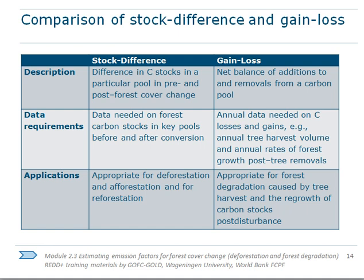A useful way to describe these two methods is the library analogy, where books represent tons of carbon. The stock difference approach counts all books before opening the library in the morning, then counts them again after closing in the evening — the difference tells how many books left. In the gain-loss approach, instead of counting all books, you sit at the entrance and record all books coming in and going out, so at the end of the day you know the total that left without knowing how many are inside.